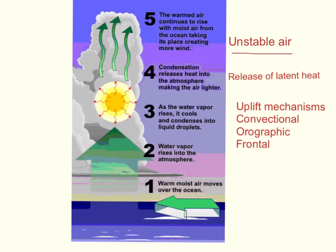The uplift mechanism is important here. This process happens whenever you have a weather system with rising air, but how it gets going differs from place to place. In the case of tropical storms, it's convectional uplift — uplift of hot, warm air. You can also have uplift caused by the orographic uplift mechanism, where air is forced to rise over mountains, cooling the air down but via a different mechanism. And there's frontal uplift, which occurs when warm air rises over cooler air, as in a mid-latitude depression. So those three uplift mechanisms are very important.